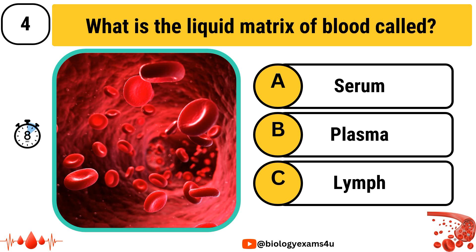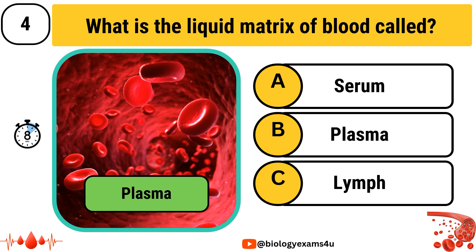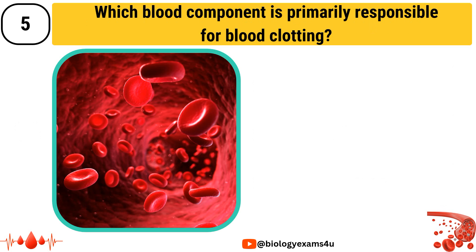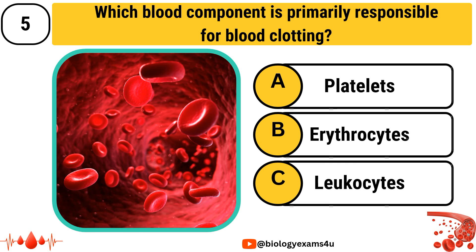The answer is Plasma. Next question: Which blood component is primarily responsible for blood clotting? The options are Option A: Platelets, Option B: Erythrozyme, Option C: Leukocytes.